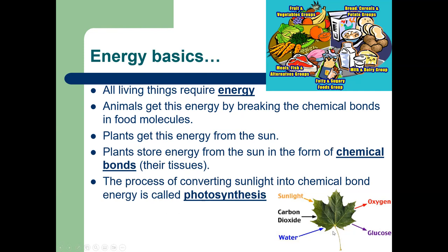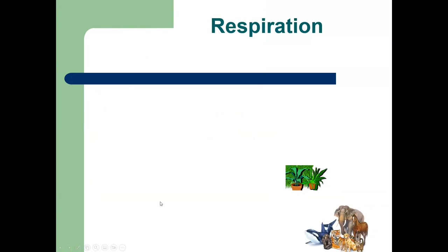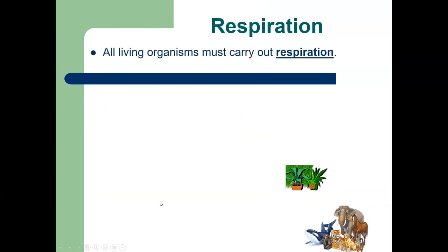The process of converting sunlight into chemical bond energy — basically food — is called photosynthesis. Sunlight comes into the leaf, carbon dioxide and water go in, and out comes oxygen that we breathe, with sugar as the main product of photosynthesis.